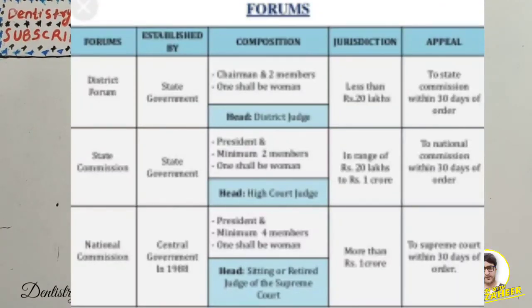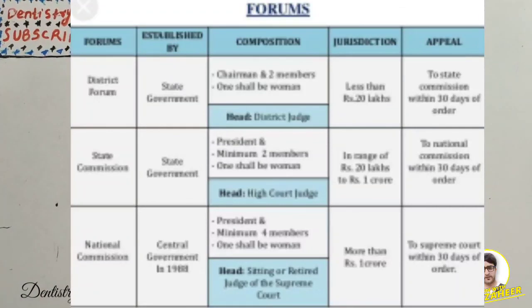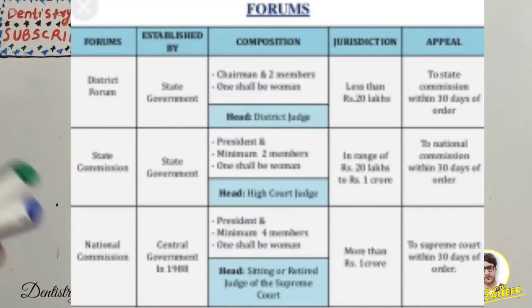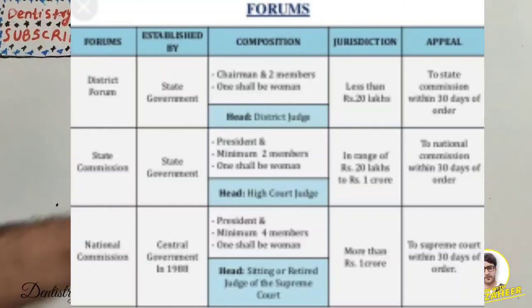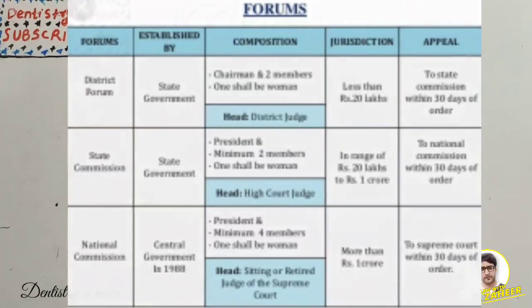COPRA is a commonly asked short note in public health dentistry, and this information should be enough to get 2.5 to 4 marks. COPRA is a very large chapter — it covers what happens at each level, appeal processes if a petition is rejected at district level, and more. Here, I have covered the basic framework at three levels, the definition of consumer, and its introduction in 1986. I will come up with a new topic soon — thank you.